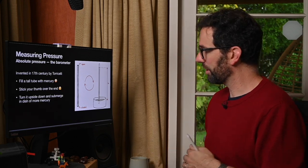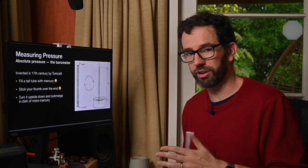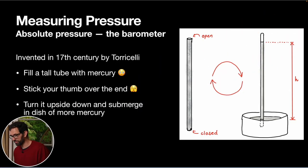So we're going to start with the most classical way of measuring atmospheric pressure, which is the barometer. Now it's kind of terrifying, you don't want to ever try and do this yourself, not that you should be able to because you should not be able to get the mercury, but it was invented in the 17th century by Torricelli.